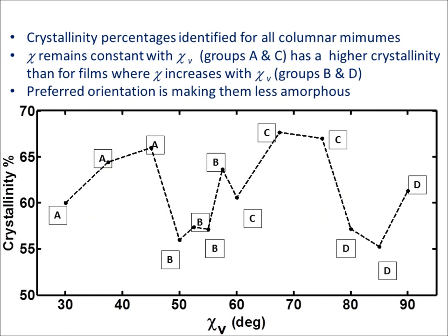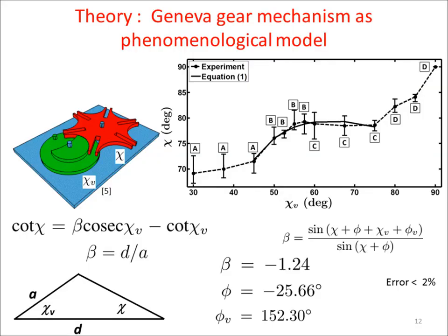We determine the crystal sizes of the columnar MIMUMs using the Scherrer equation. Crystallinity percentages were identified for all columnar MIMUMs. We note that groups A and C, where chi remains constant with chi-v, have higher crystallinity than groups B and D, where chi increases with chi-v. This indicates that the preferred orientation is making them less amorphous.